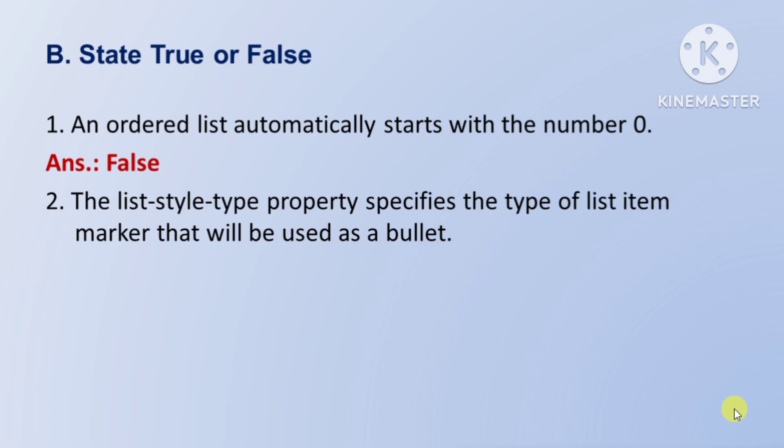Next question: the list-style-type property specifies the type of list item marker that will be used as a bullet — list-style-type property list item marker ke type ko specify karti hai, jiska prayog baad mein bullet ke rup mein hoga. Toh yeh true hai.